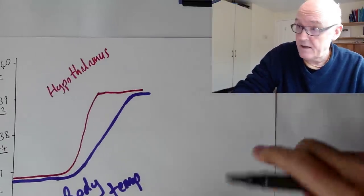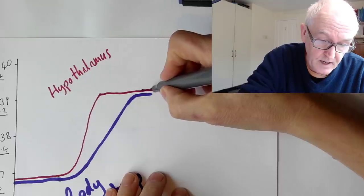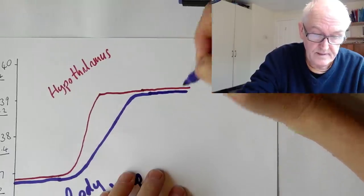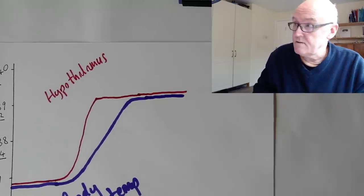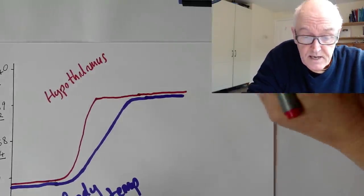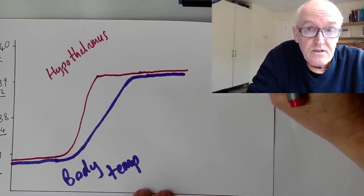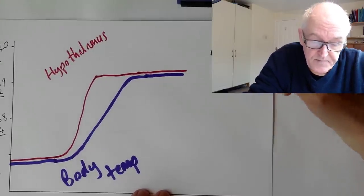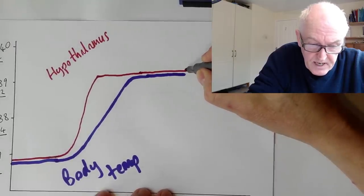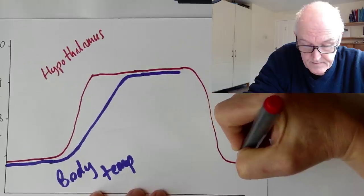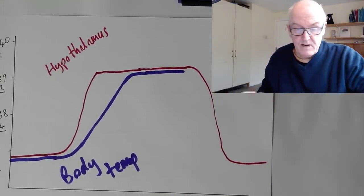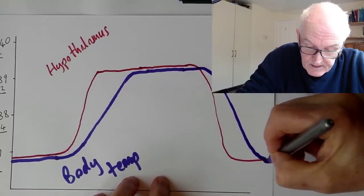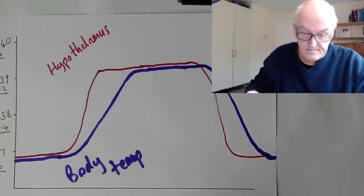So the hypothalamus will keep the temperature higher for a period of time — could be a few days — and the body temperature will just tag along. Then when the immune system has got rid of the infection, the hypothalamus will realize that there are no cytokines stimulating anymore because the infection's gone. We don't have the exogenous cytokines stimulating the release of the endogenous cytokines from the white cells, from the leukocytes. So the set point in the hypothalamus will go back down to normal, and again very often there's a bit of a lag as the body takes a while to catch up. And everything's back to normal again — those two lines are now essentially at the same level.